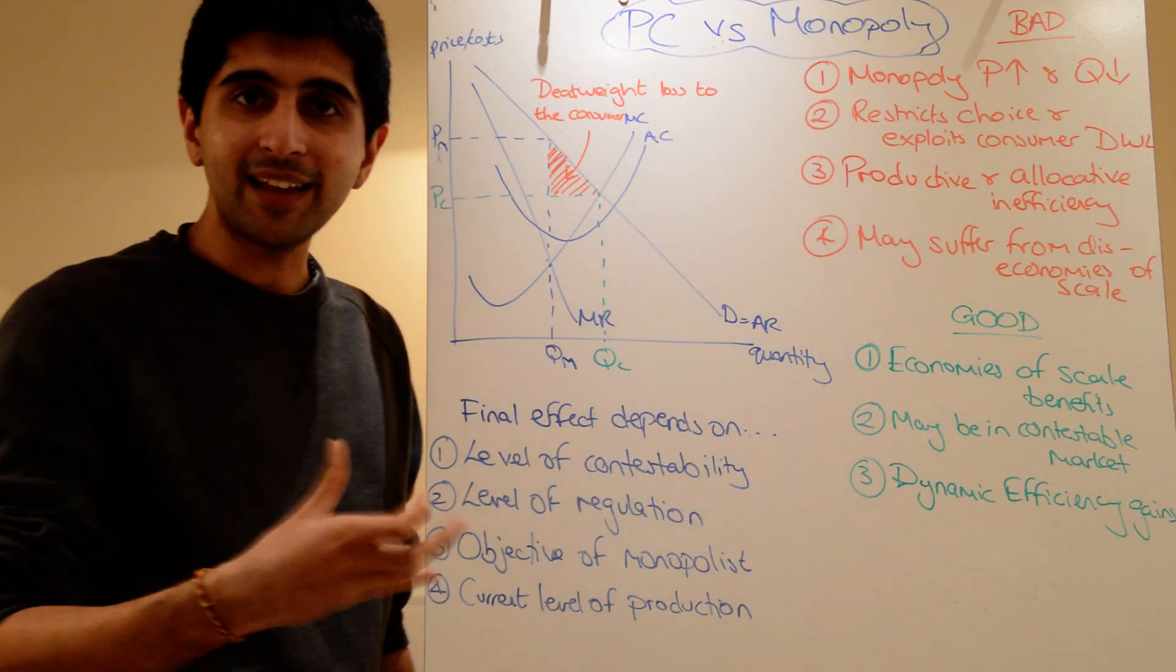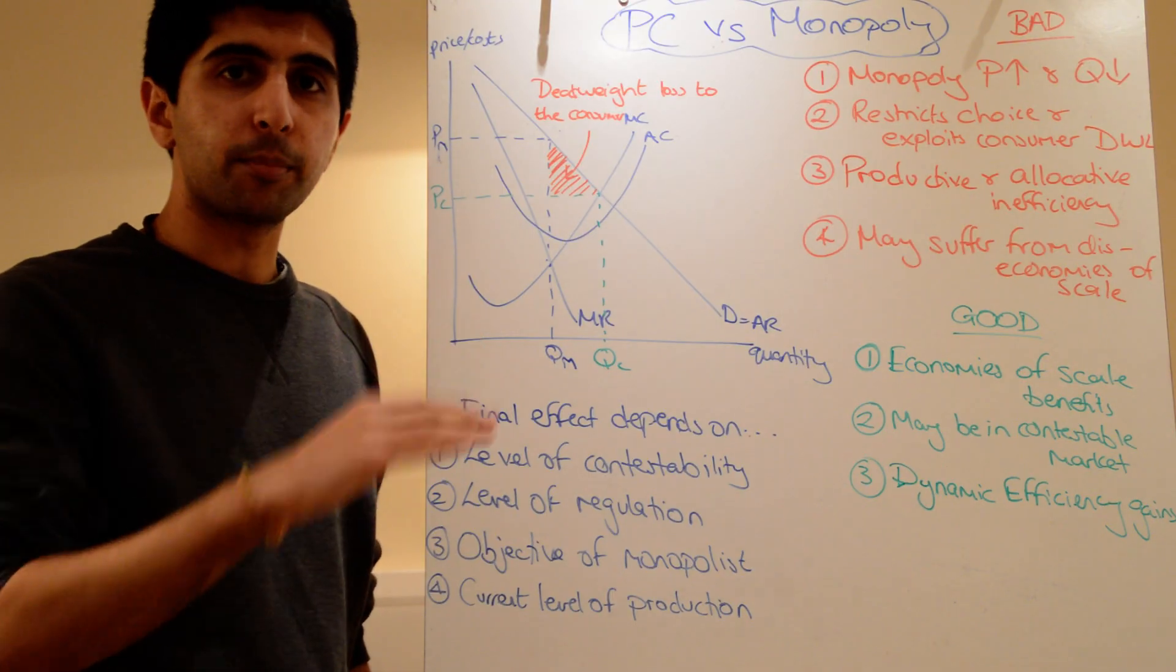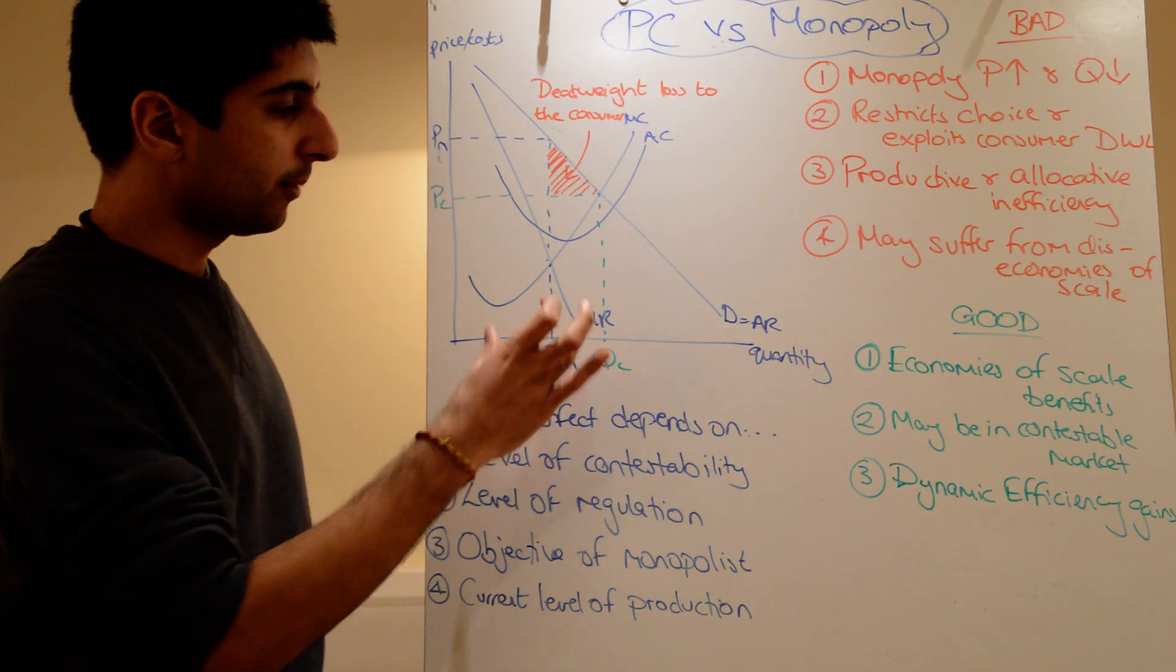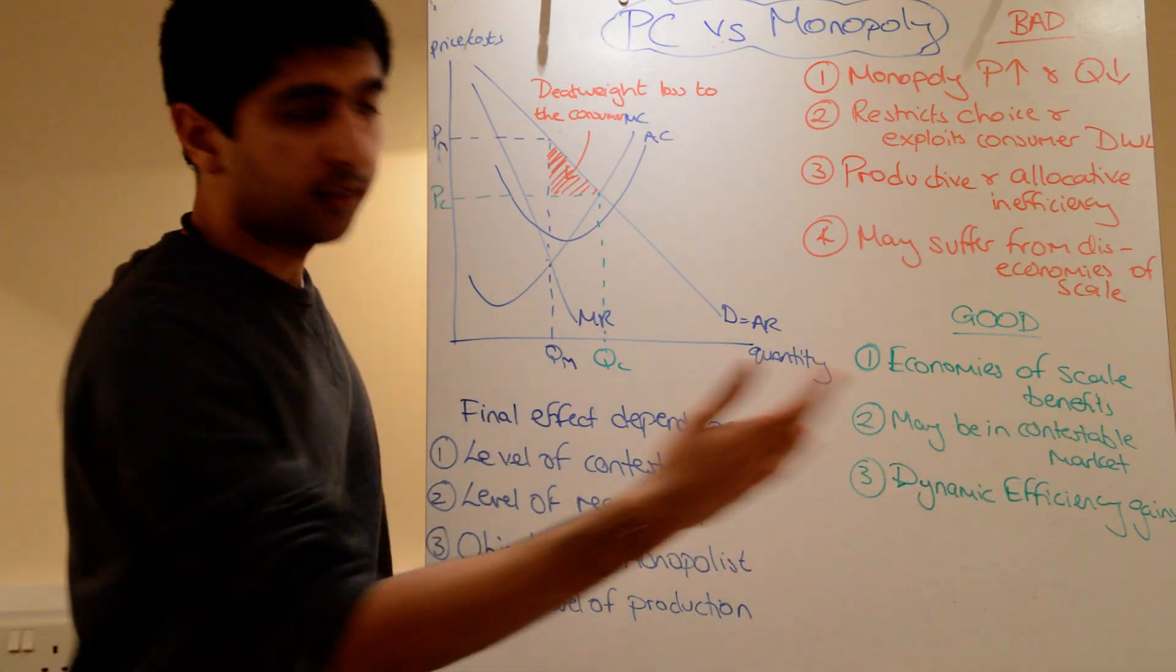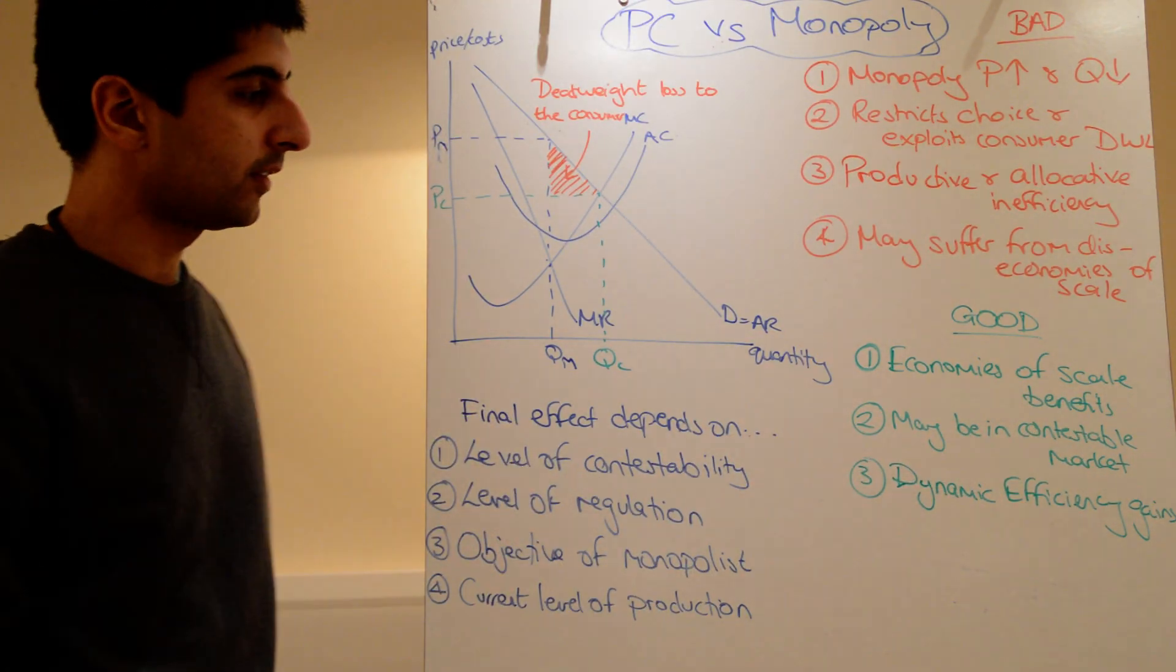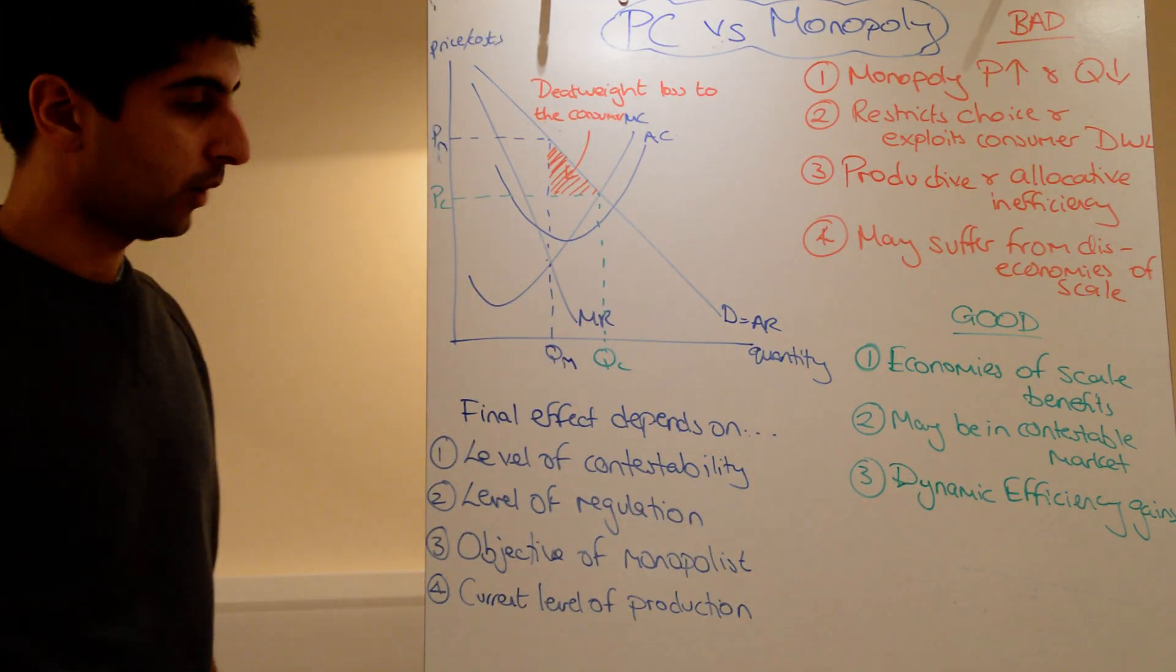Why else might a monopoly be good? Well, if they're operating in a contestable market, it could be actually very good for the consumers. It might mean there are lower prices and greater quantities. Okay? Pricing quantities closer to the competitive levels. If you want more understanding of contestable markets, look at my video on that to understand it. And there might be some dynamic efficiency gains too, one of the big arguments as to why a monopoly is quite good.